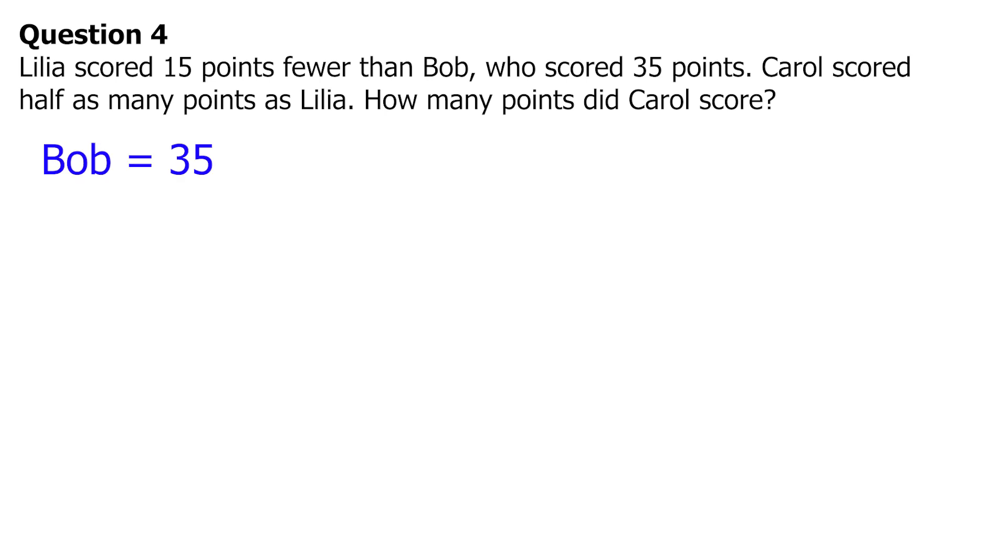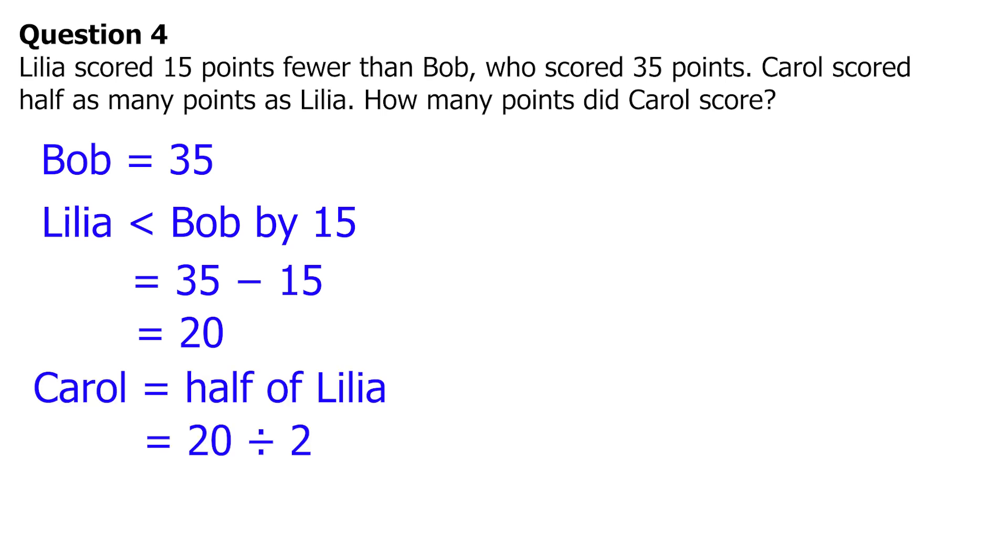Bob scored 35 points. Lillia scored 15 points fewer than Bob, which is 35 minus 15 equals 20 points. Carol scored half as many points as Lillia, which is 20 divided by 2 equals 10 points. So Carol scored 10 points.